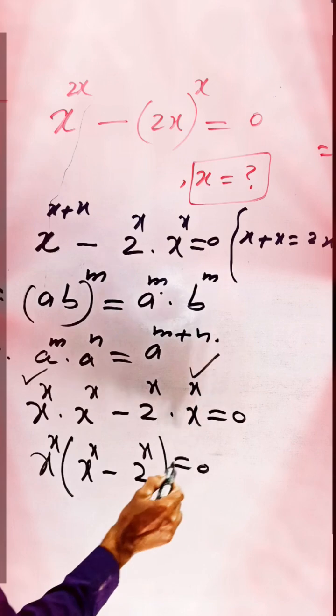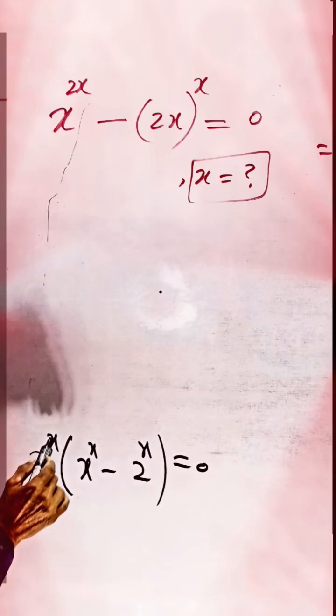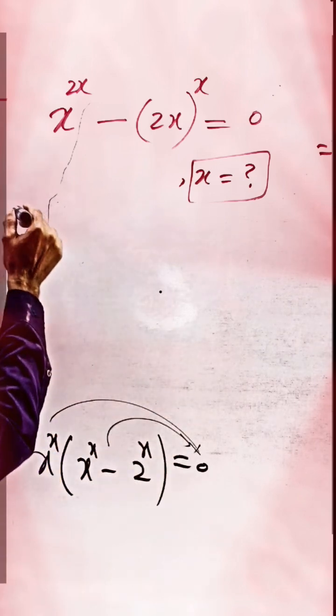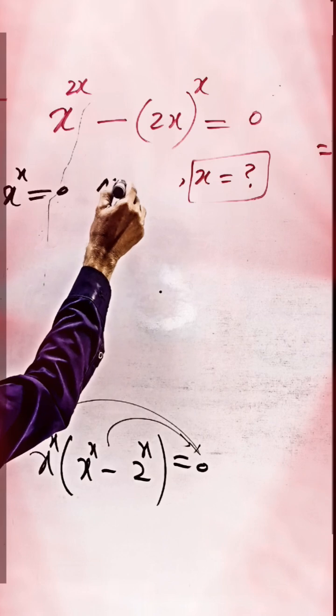x to the power of x is remaining, and 2 to the power of x equals 0. It means that one of the results is 0. This result equals 0 and this result equals 0. x to the power of x equals 0 is not valid, this is not possible.